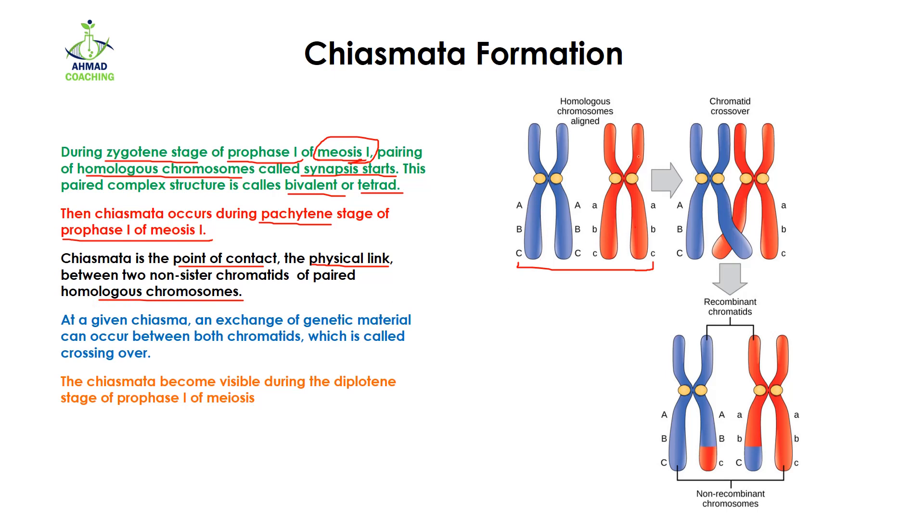Chiasmata is the point of contact, a physical link between two non-sister chromatids of paired homologous chromosomes. We have two homologous chromosomes which are paired with each other. These chromatids are non-sister chromatids while these two are sister chromatids. Chiasmata takes place between the non-sister chromatids of two homologous chromosomes. Chiasmata is a physical point or point of contact between the two non-sister chromatids of homologous chromosomes, meaning they are going to make a physical link with each other.